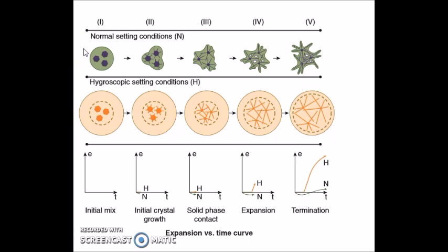What happens is that you mix the powder with the water and a mixture is formed. When you leave this mixture as it is, without immersing it into any water, normal setting expansion takes place. In black are shown the nuclei and in green is shown the water of the mixture itself. With the passage of time, as the material sets, crystals of dihydrate start growing from the nuclei, consuming the water of the mixture through hydration.